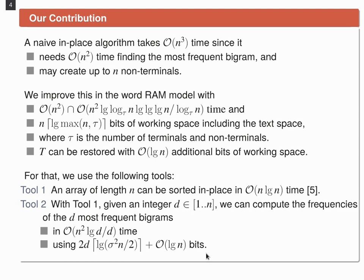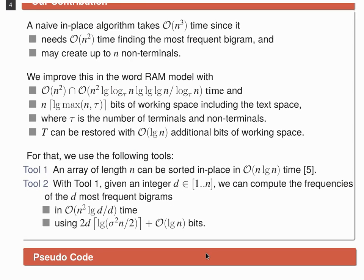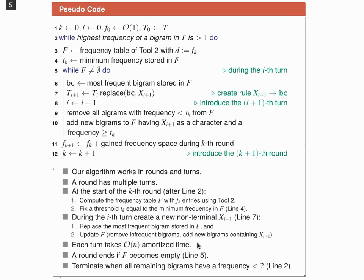And how we can do that is shown in the following pseudocode. You can see here that we have two while loops. And the idea is that our algorithm works in rounds and turns, where a round has multiple turns. The outer while loop corresponds to the rounds, while the inner while loop corresponds to the turns.